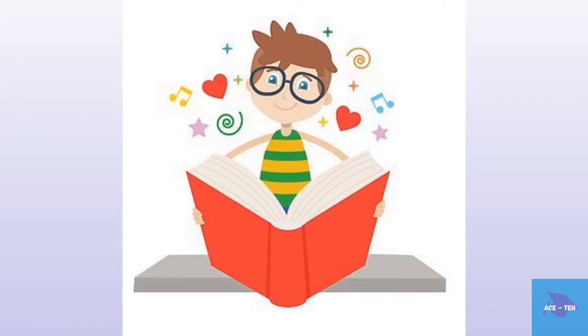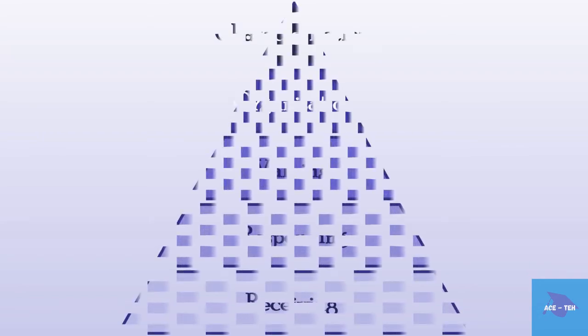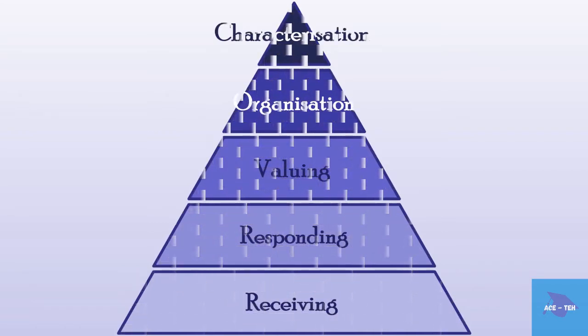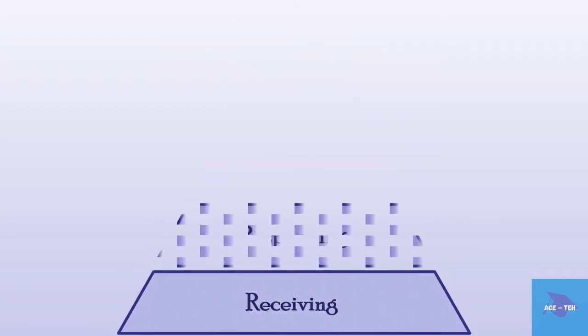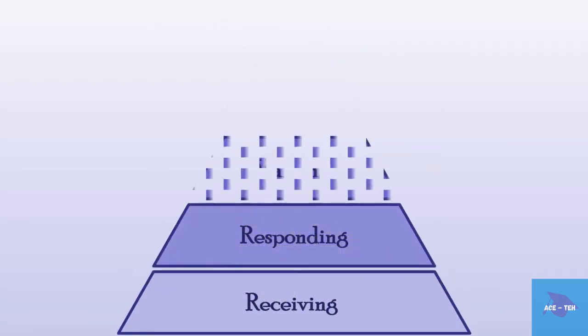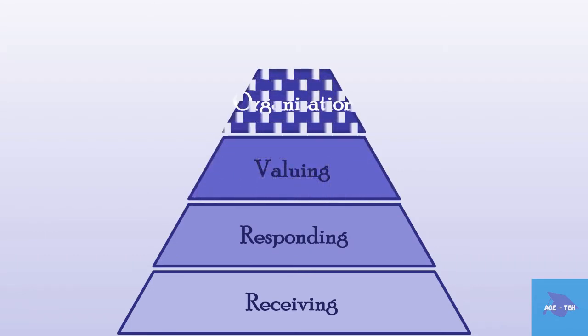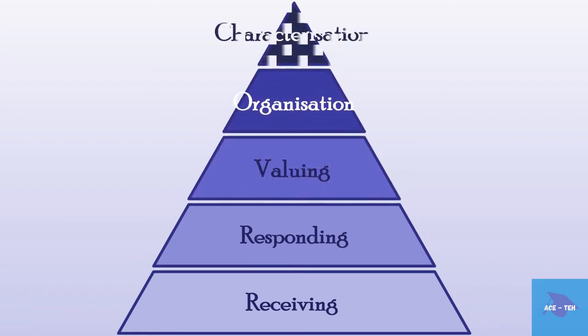According to Krathwohl, like cognitive objectives, affective objectives can also be divided into a hierarchy. As this area is concerned with feelings or emotions and also social or emotional learning and skills, the taxonomy is arranged from simpler feelings to those that are more complex. The affective domain is divided into five major classes of objectives — the behavioral abilities that lead to the formation of attitude.